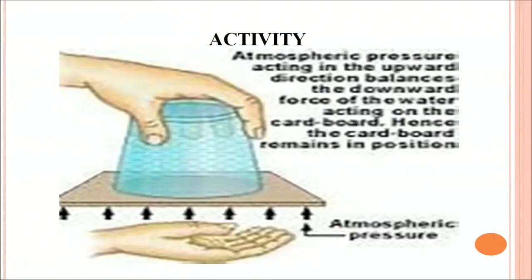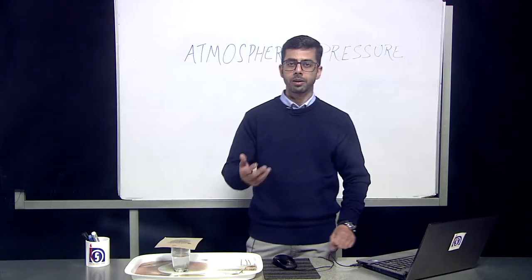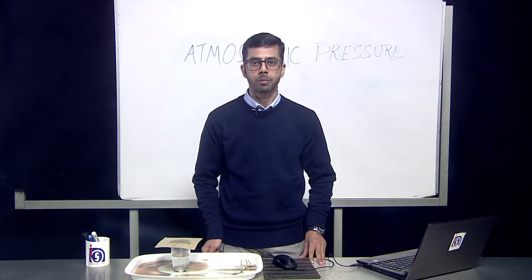Through this diagram we try to explain that the atmospheric pressure acting in the upward direction balances the downward force of the water acting on the cardboard. Therefore, the cardboard remains in position. What is this atmospheric pressure?